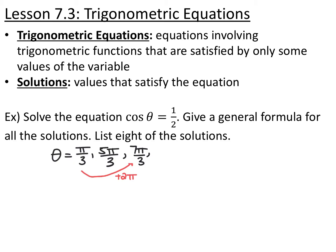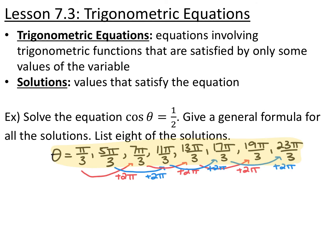Same thing with the next one: if I keep going around the circle, the next one is five pi over three plus two pi, which gives eleven pi over three. Continuing the pattern and adding two pi each time: seven pi over three plus two pi is thirteen pi over three; eleven pi over three plus two pi is seventeen pi over three; thirteen pi over three plus two pi is nineteen pi over three; and seventeen pi over three plus two pi is twenty-three pi over three. So these are the first eight places where cosine is equal to one half.